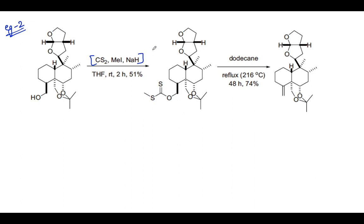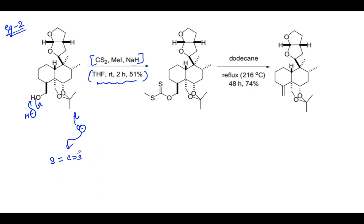Again we see the same combination: carbon disulfide, methyl iodide, and sodium hydride. The other conditions — THF as an ether solvent — are just experimental conditions we don't need to worry about. Sodium hydride takes away the proton, giving O⁻; O⁻ attacks on carbon disulfide to give the intermediate, which then attacks on methyl iodide to finally give the xanthate ester.